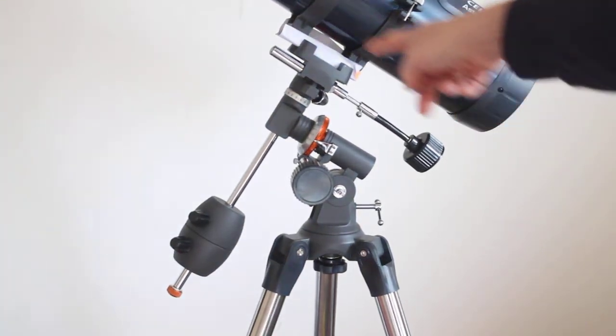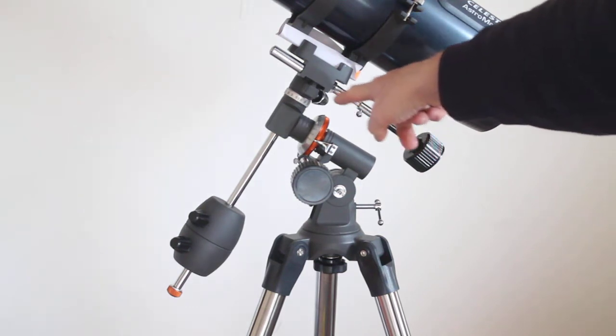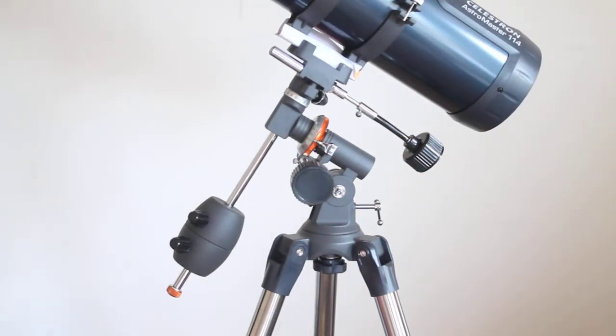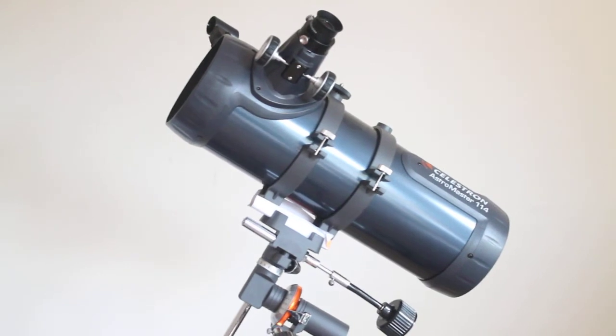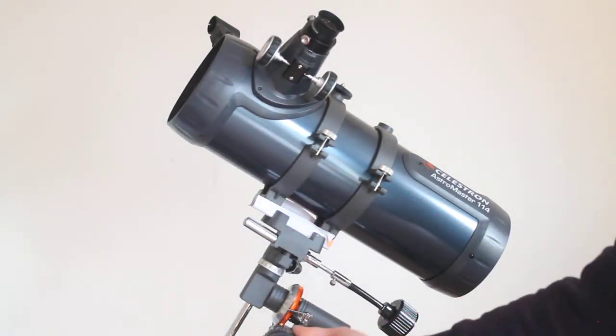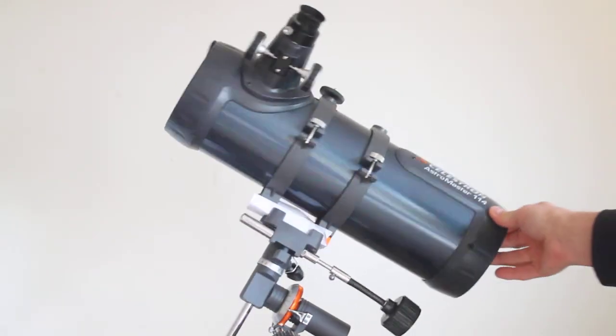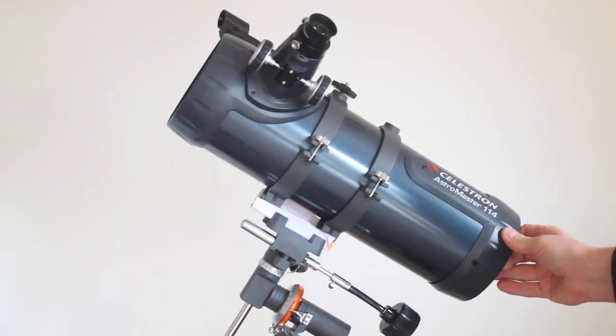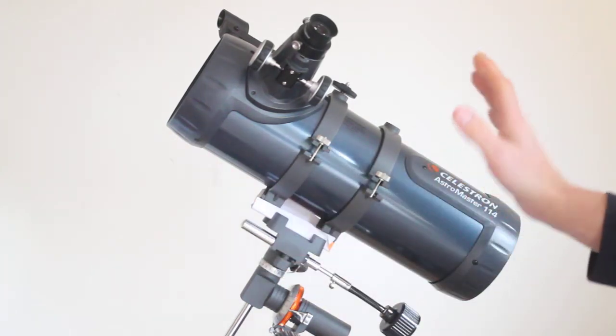When you're setting this up before you put the scope on, make sure the connector here for the slow motion control is on the bottom. That makes it much easier when it comes to using it. Regarding moving the telescope around, very easy - you can either use the slow motion controls or move it around manually. When you do set it up, point it north and try to get it nice and flat.